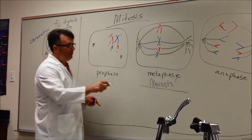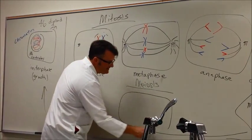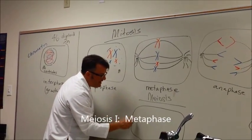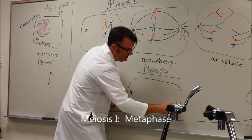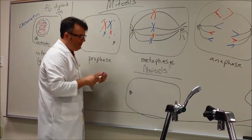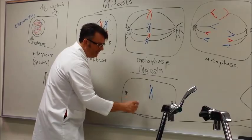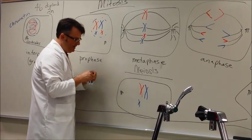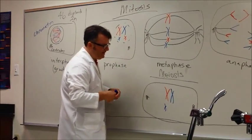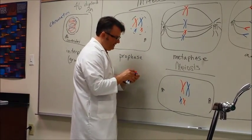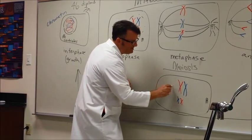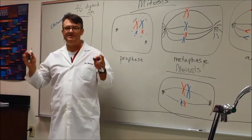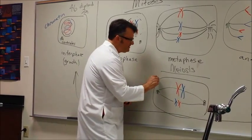In meiosis, when we talk about metaphase, instead of single file like this, what happens is it's the buddy system. So homologous chromosomes pair up. Big blue and big red pair up like this. Baby blue and baby red pair up like this. Spindle fibers are holding these in place. So we have pairing. This process is called synapsis.